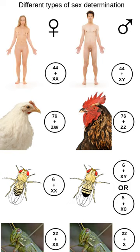In some species, such as humans, organisms remain sex-indifferent for a time after they are created. In others, however, such as fruit flies, sexual differentiation occurs as soon as the egg is fertilized.